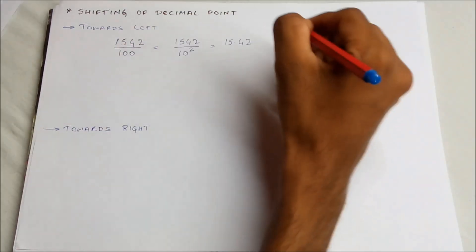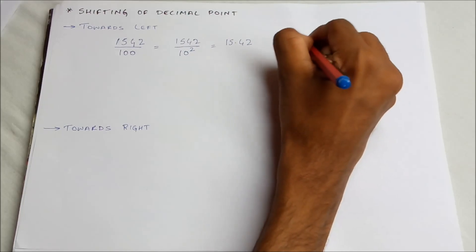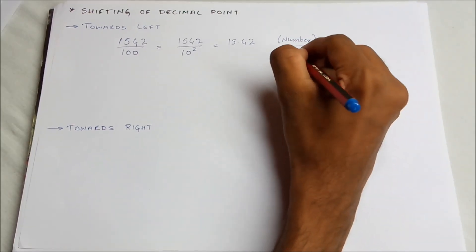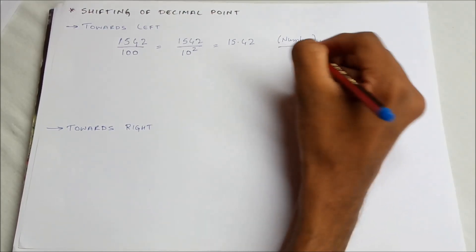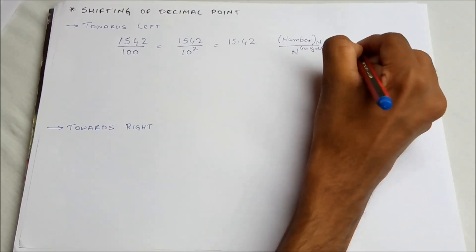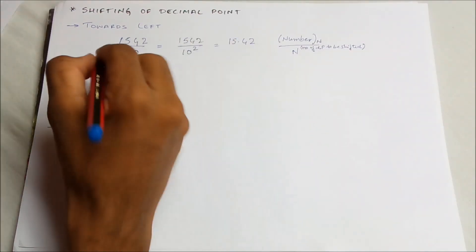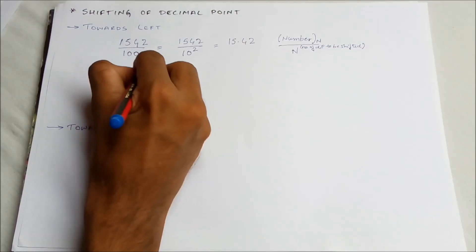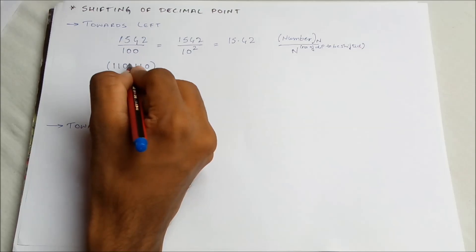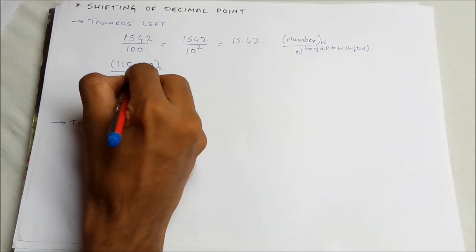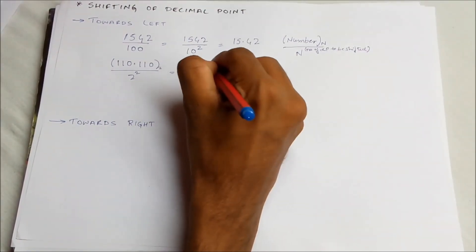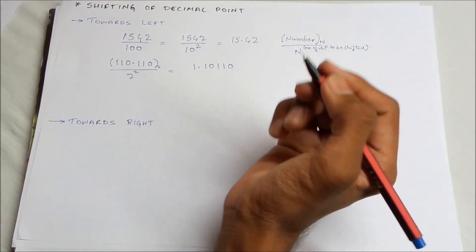So basically, if there is a number to the base n and you want to shift the decimal point towards the left, you divide it by the base n to the power of the number of decimal places to be shifted. For example, consider the binary number 110.110. To shift its decimal point two places towards the left, you divide by 2 to the power of 2, so this becomes 1.10110.